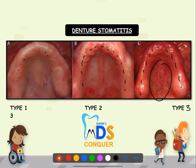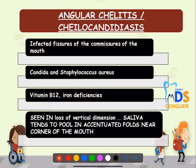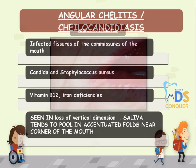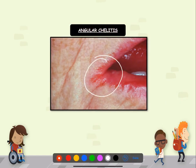Angular cheilitis, or cheilo-candidiasis, presents as fissures at the commissures of the mouth. Along with Candida, Staphylococcus aureus is also involved. It is seen in patients with vitamin B12 and iron deficiencies, and in cases of reduced vertical dimension where saliva pools in those folds at the corners of the mouth, which can aggravate angular cheilitis.